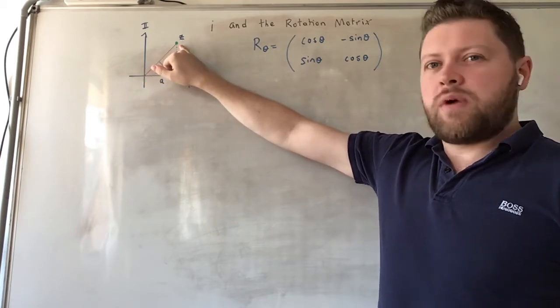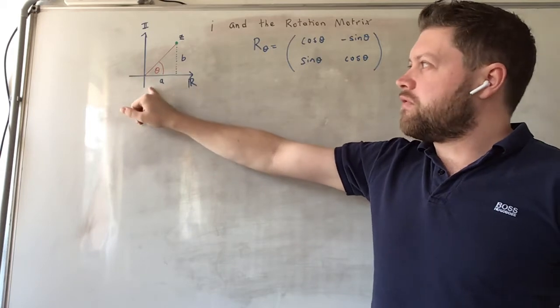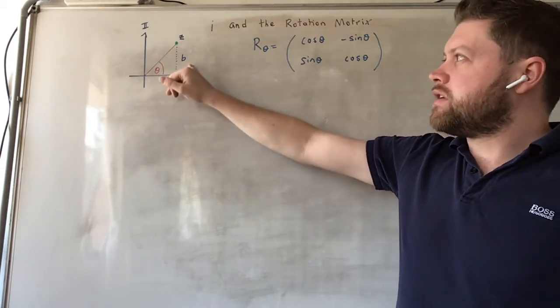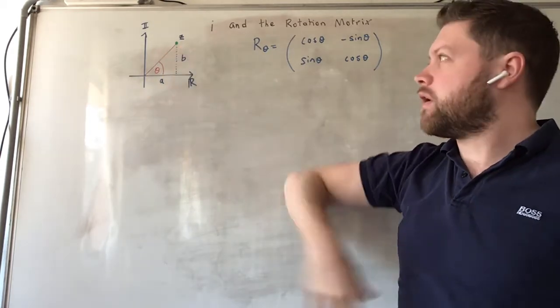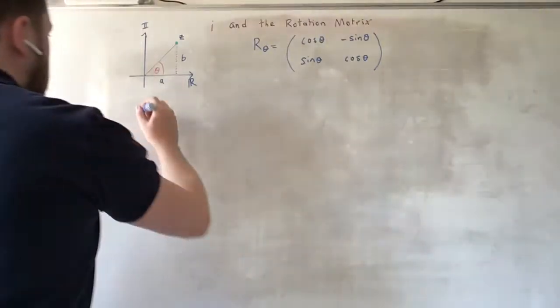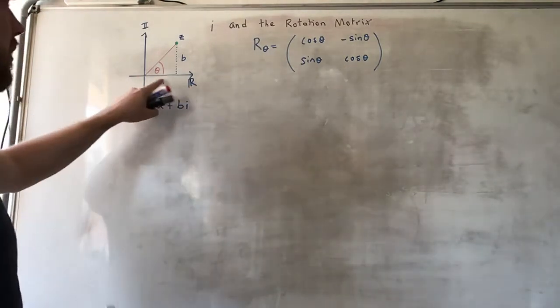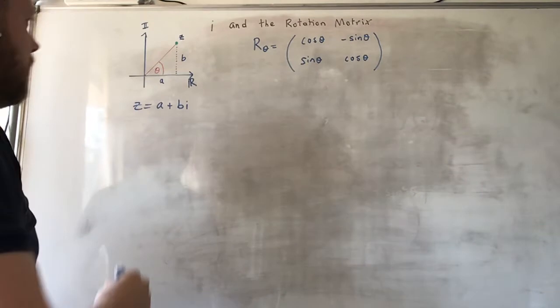Z here represents the complex number, which is a composite of a real part and an imaginary part. We can represent this in the standard form as Z equals A plus Bi, where A is the real part and B is the imaginary part.